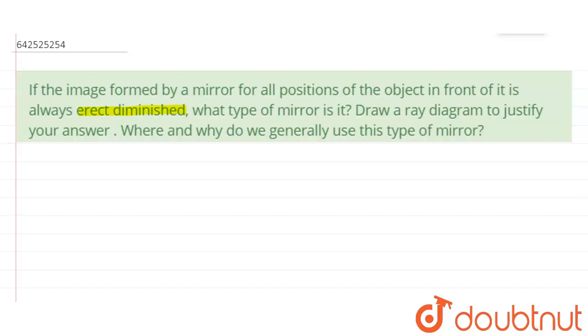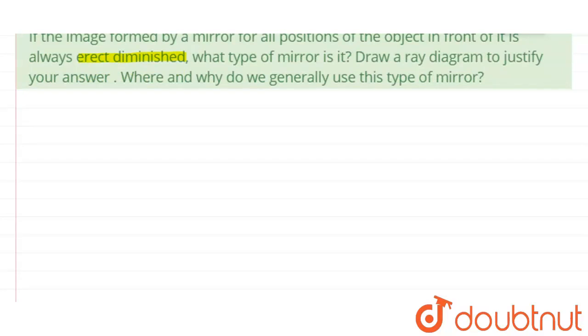So we know when the image is erect and diminished, that simply means that the mirror must be a convex mirror. The mirror is must be a convex mirror. Now I am going to prove this by a ray diagram.